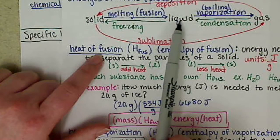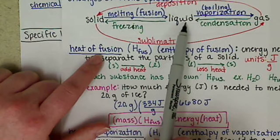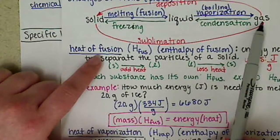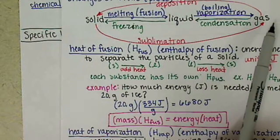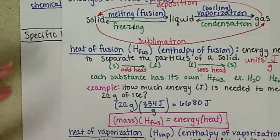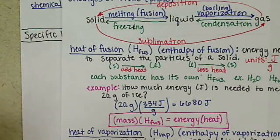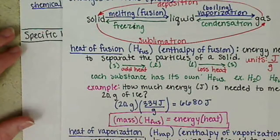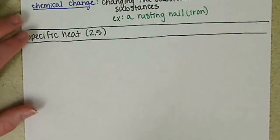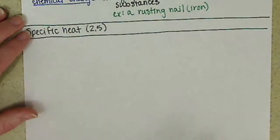But then we still have to warm up that liquid up to its boiling point in order to get it to go from a liquid to a gas. And that heating up of the water, so not doing a phase change, but actually increasing the temperature, has an energy associated with that. And that energy is the specific heat.